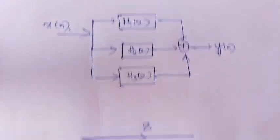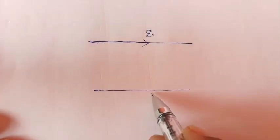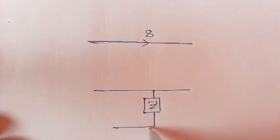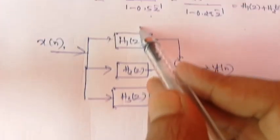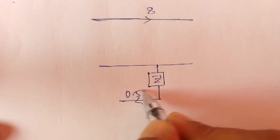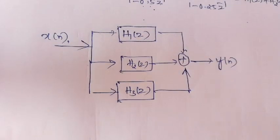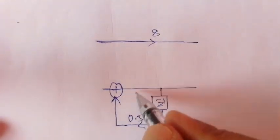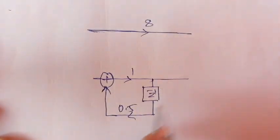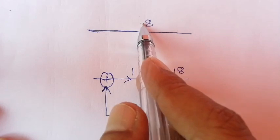For the second system function H2(z) = 18/(1 - 0.5z⁻¹): there is one time delay. The coefficient term is -0.5, so we take the opposite sign, giving +0.5 feedback. The constant term (zero system) is 18.